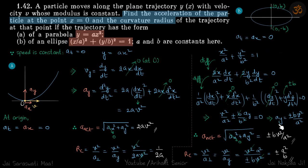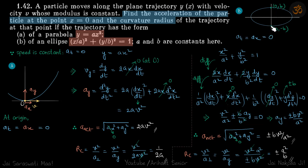Since x is 0 at these points and we have found ay, a_net equals ay equals plus or minus bv squared over a squared. The plus and minus signs indicate direction — ay is downward at one point and upward at the other, depending on the direction of travel. The radius of curvature is v squared divided by a_perpendicular, which equals ay. So radius of curvature equals a squared divided by b, and the sign indicates which point we are referring to.